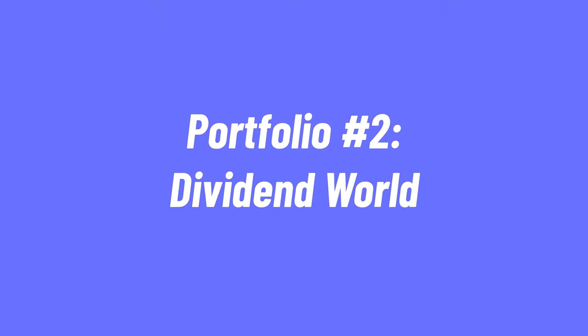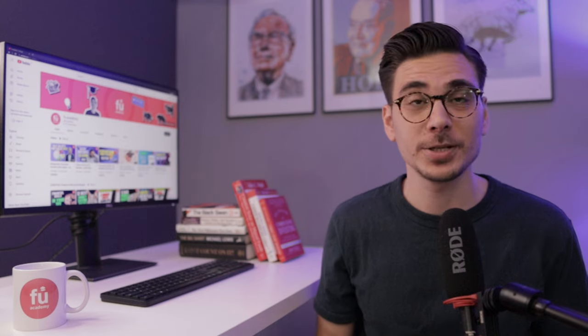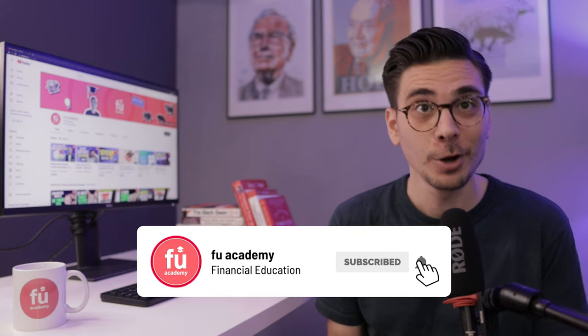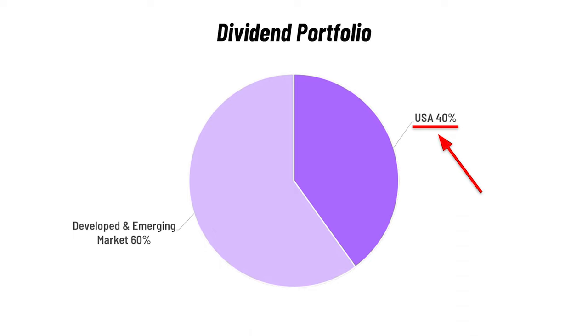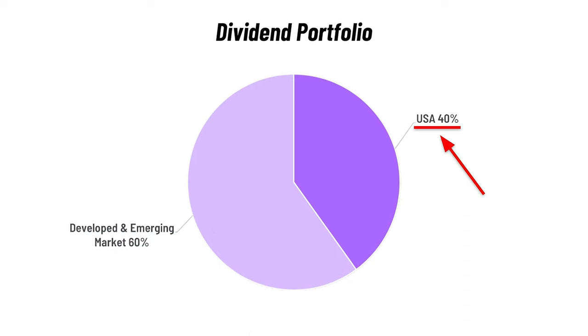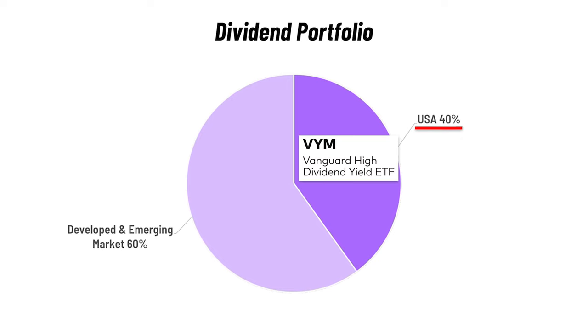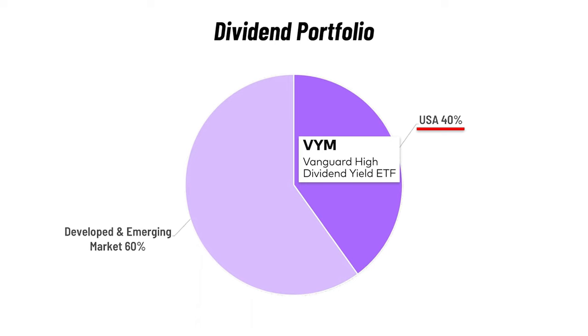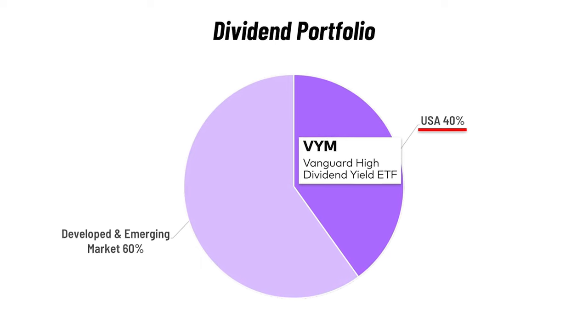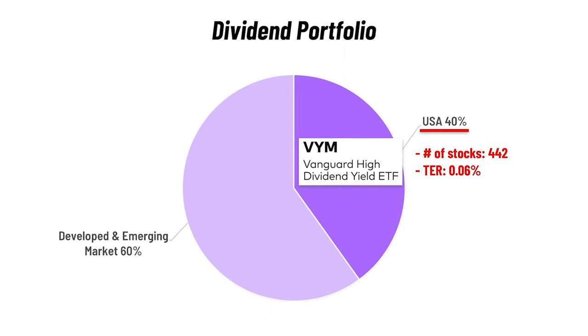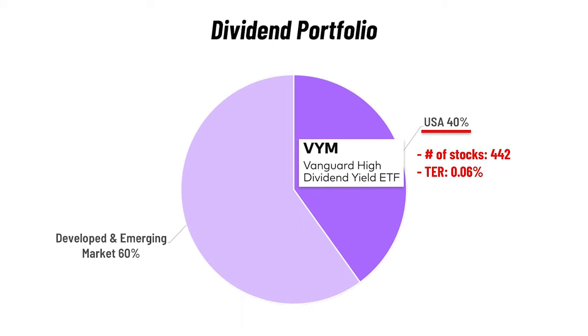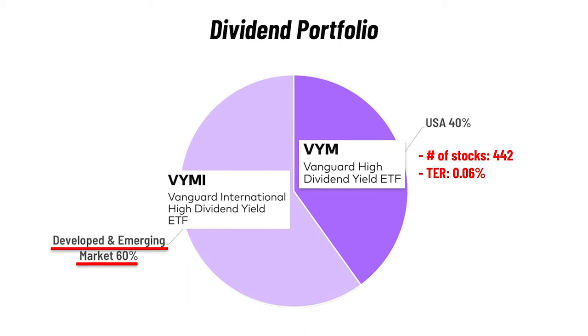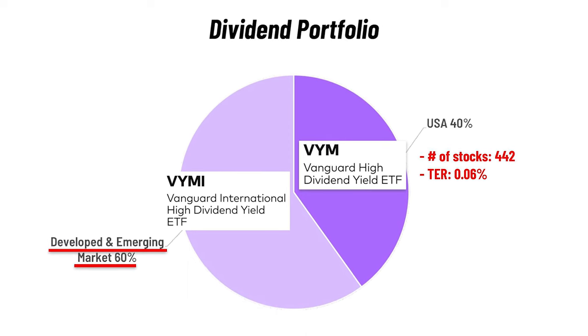Next up is the dividend portfolio. Dividend investing can reduce volatility because companies that pay out high dividends are usually more stable and have higher profits. It's also a great way to build a passive income stream. You can build a dividend portfolio with two ETFs. For the US dividend ETF, you could go for Vanguard's High Dividend Yield ETF, ticker symbol VYM. It invests in over 400 US stocks forecasted to have above-average dividend yields, with an expense ratio of 0.06%.